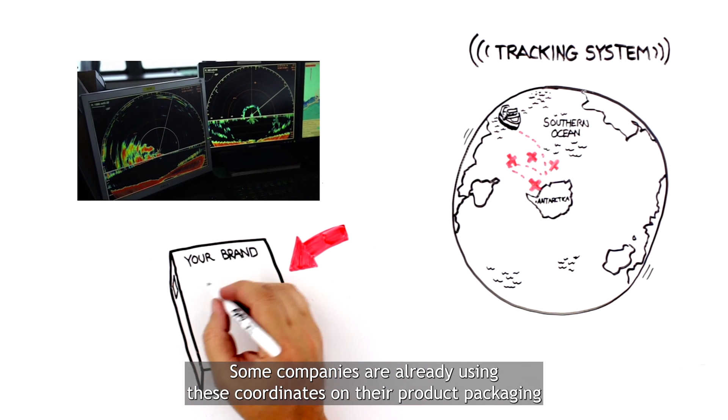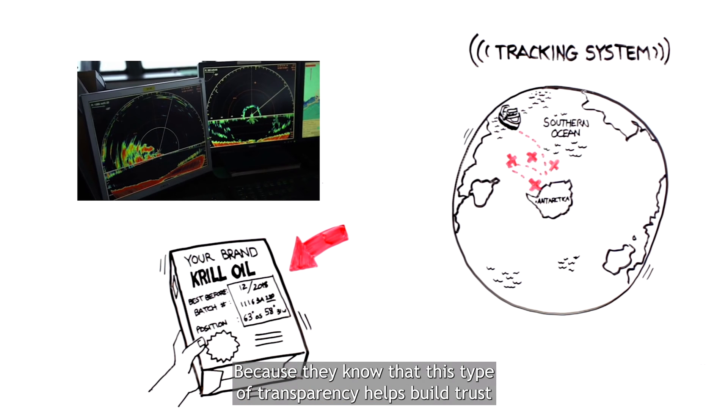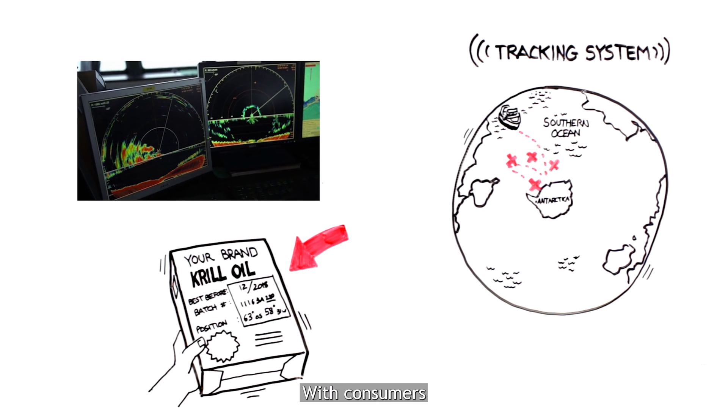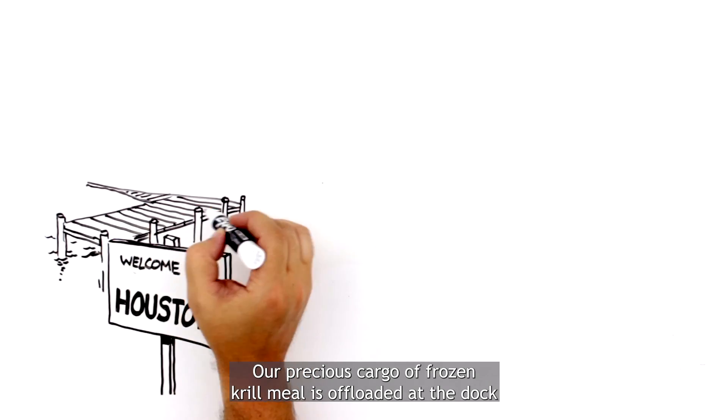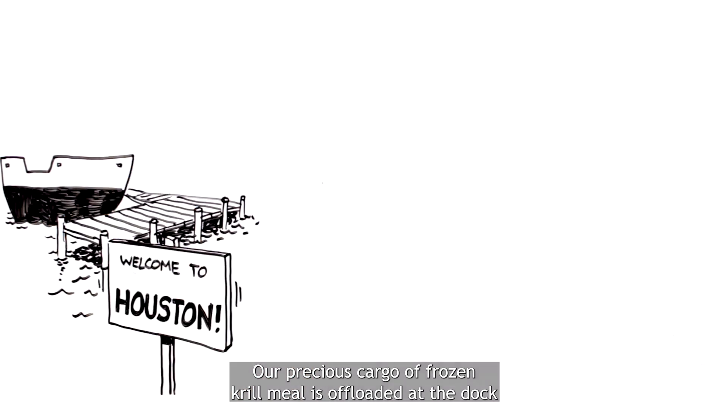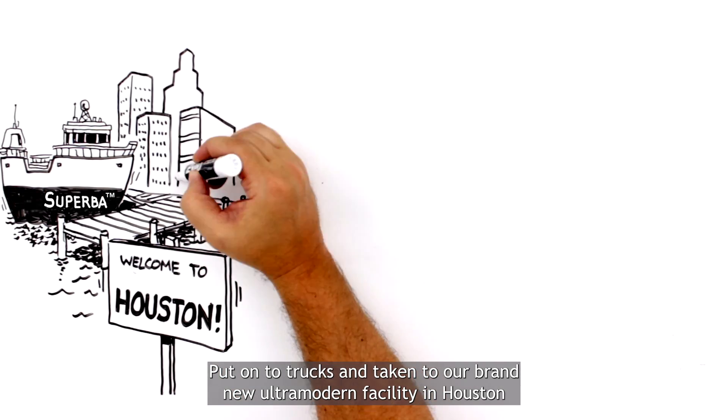Some companies are already using these coordinates on their product packaging because they know that this type of transparency helps build trust with consumers. After arriving at the Port of Houston, our precious cargo of frozen Krill Meal is offloaded at the dock, put onto trucks, and taken to our brand new ultra-modern facility in Houston.